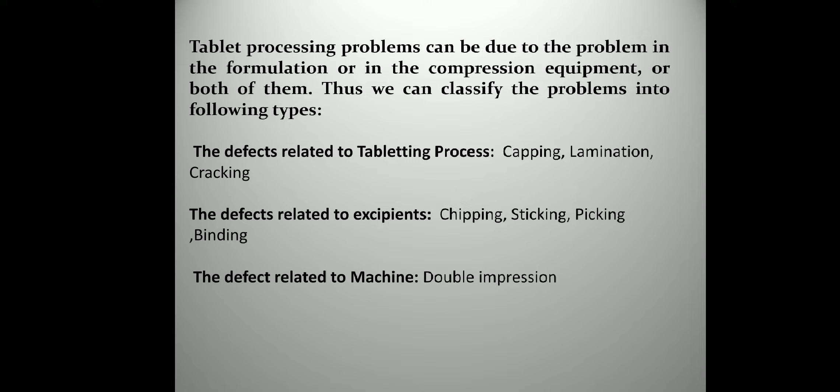Tablet processing problems can be due to the formulation, the compression equipment, or both. Thus we can classify the problems into the following types: defects related to the tableting process — capping, lamination, and cracking; defects related to excipients — chipping, sticking, peaking, and binding; and defects related to the machine — double impression.